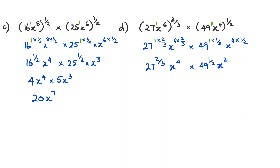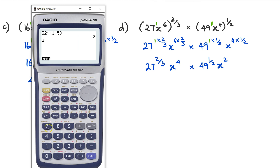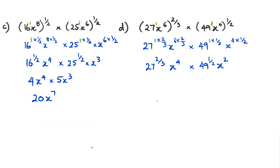We need to figure out what 27 to the power of two thirds is. I'll use the calculator, though I do know the answer is 9. The reason I knew it was 9 is because the 3 in the denominator is the cube root — the cube root of 27 is 3, and then 3 squared is 9. So we've got x to the power of 4 as is, and 49 to the power of half, which is the same as the square root of 49, which equals 7. And x squared stays as it is. So 9 times 7 is 63, and x to the power of 4 times x to the power of 2 gives us x to the power of 6. That's how we add the two powers.